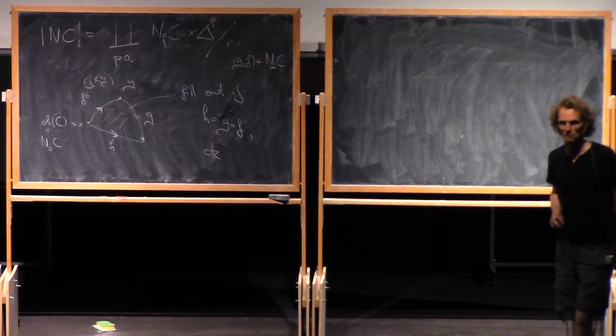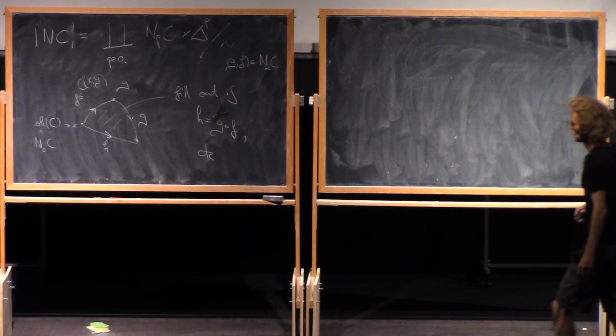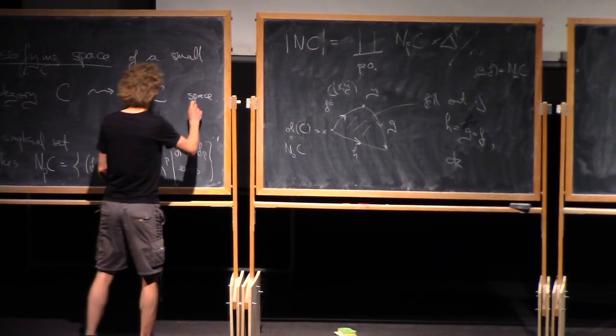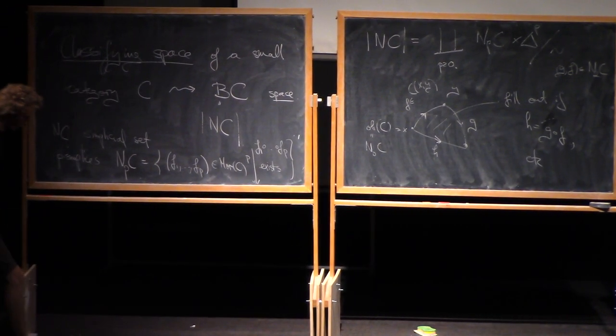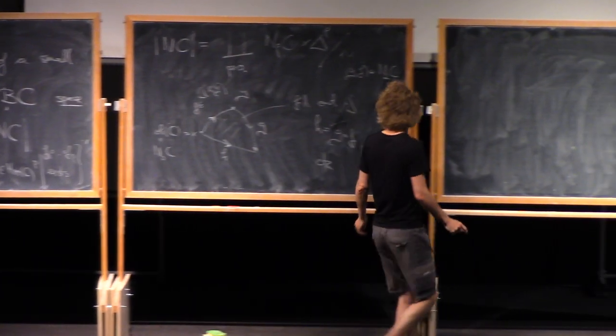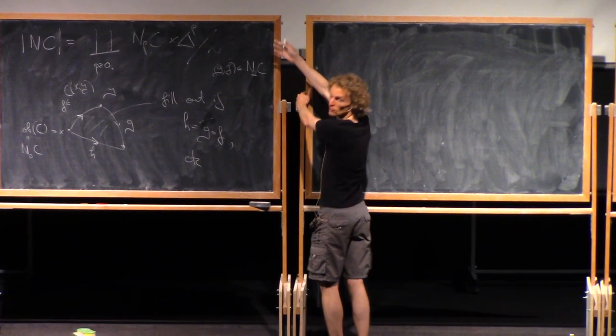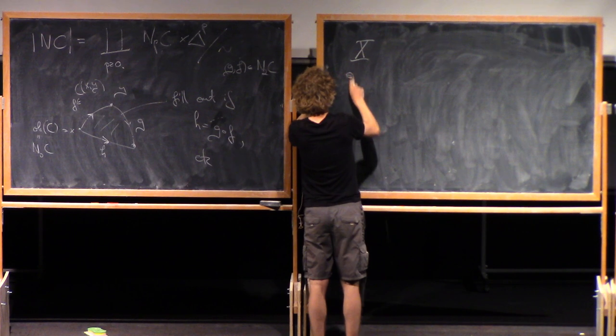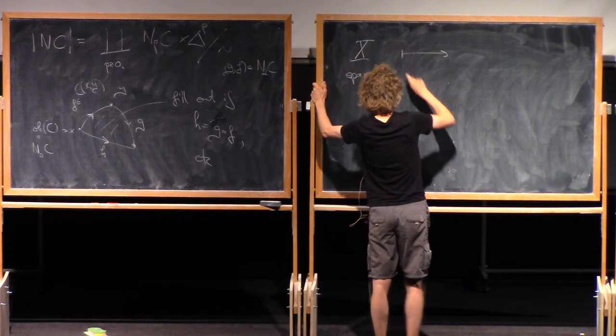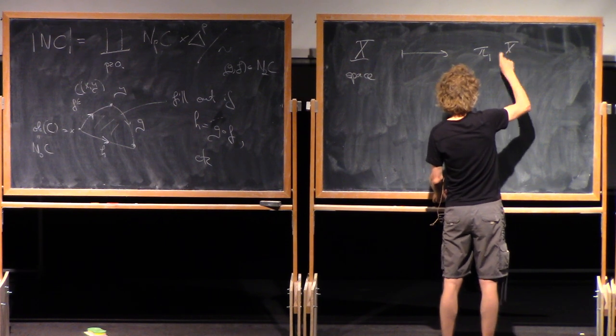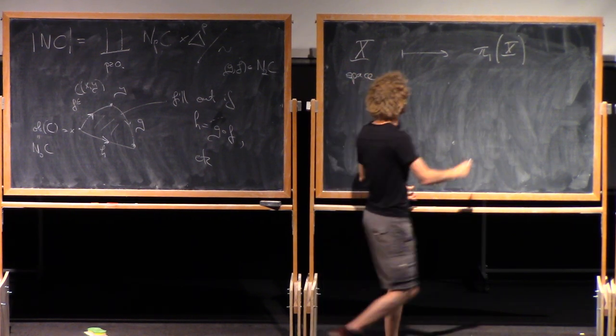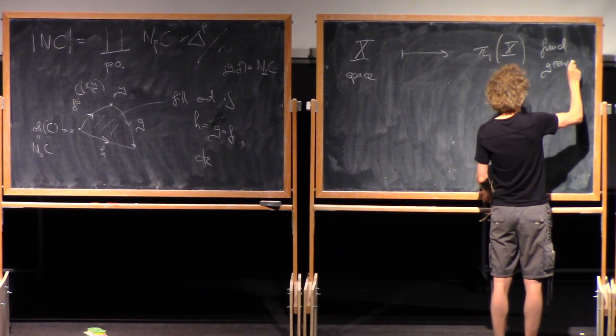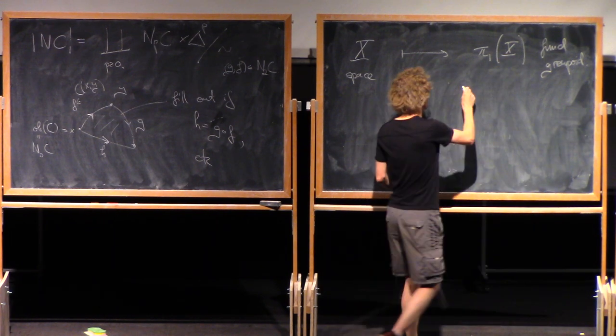So this is how to turn a category into a space. In the other direction, I can turn a space into a category. Namely, the fundamental groupoid that I'm going to denote π₁ of X. It's a category.